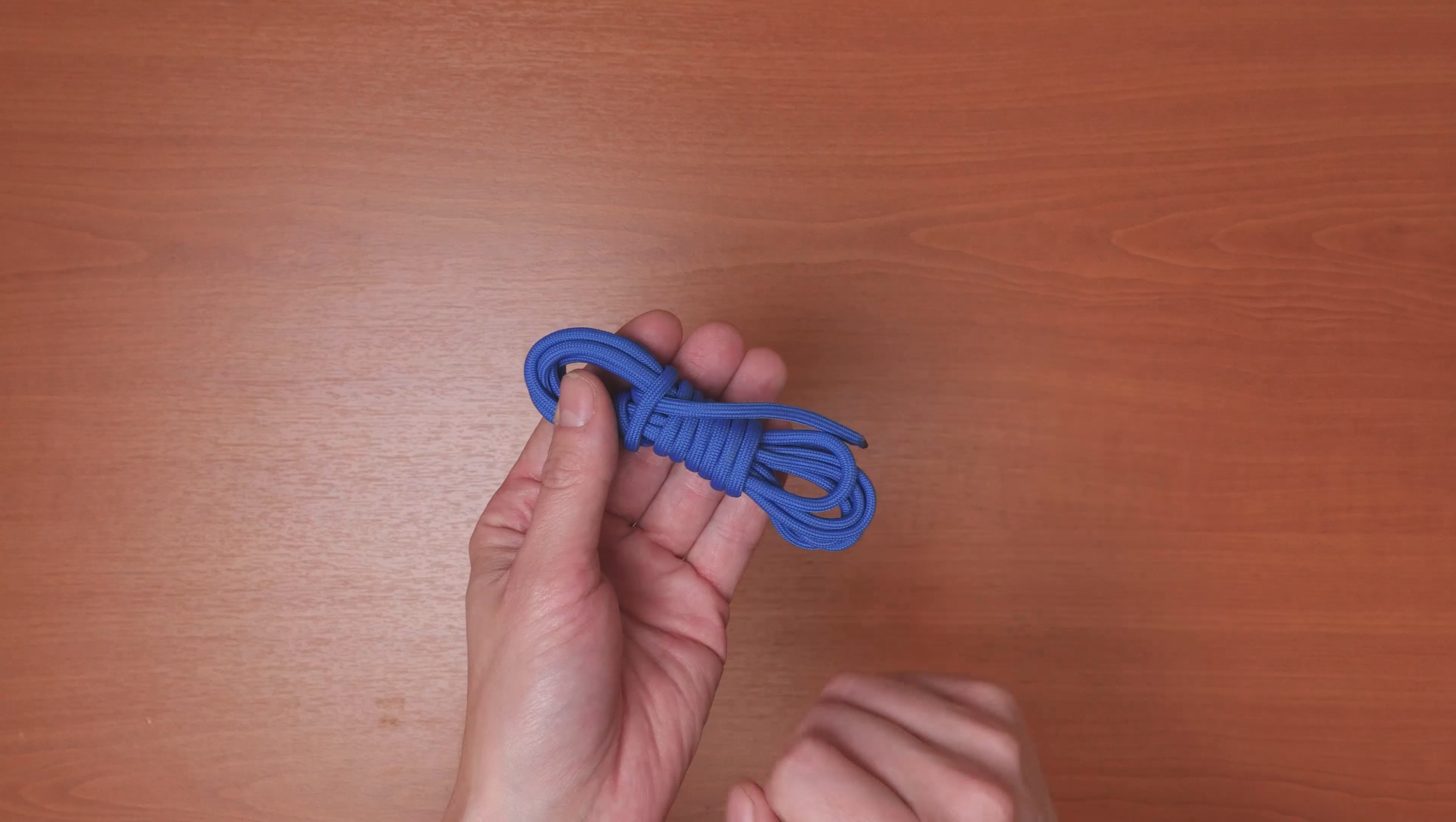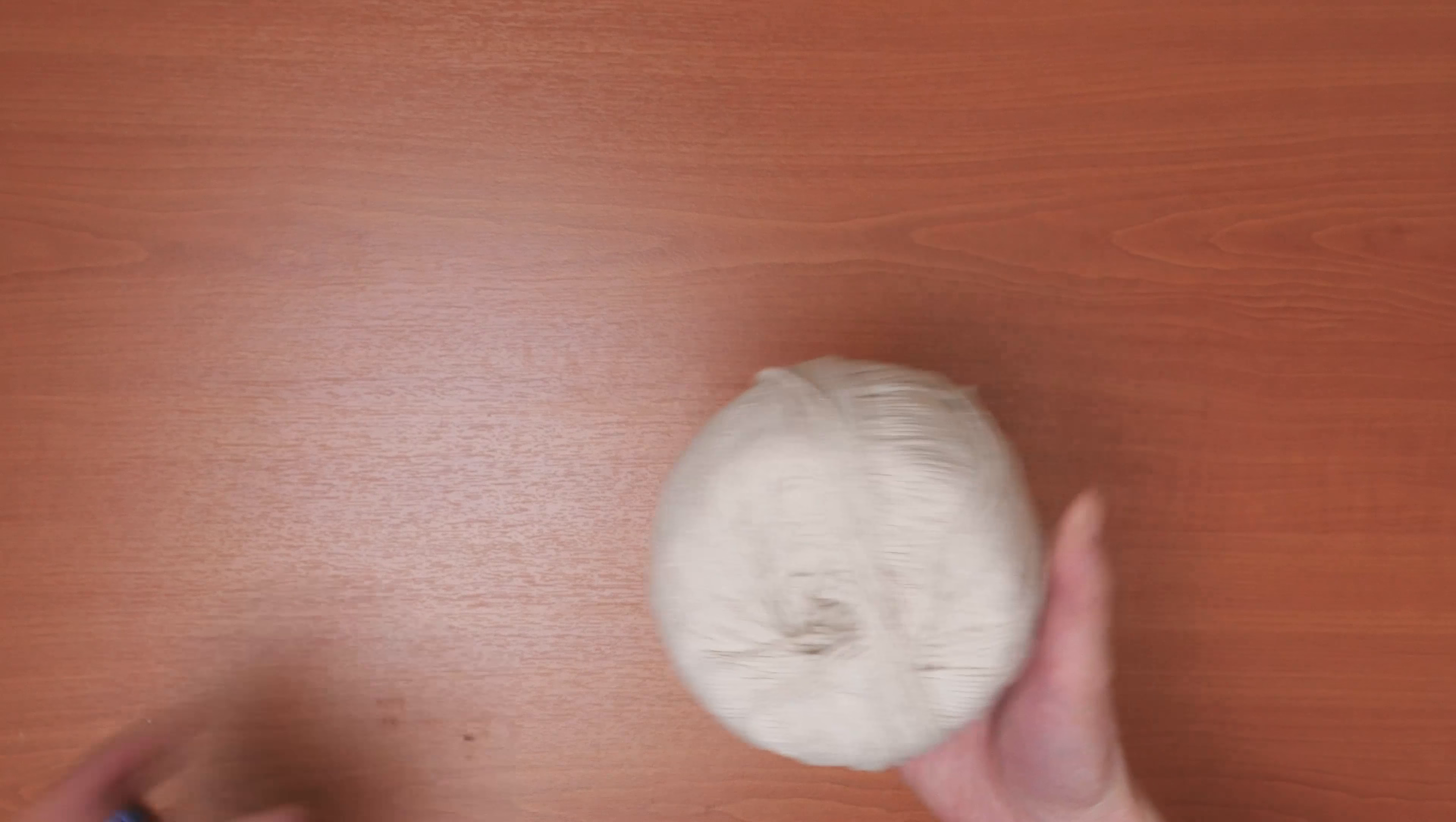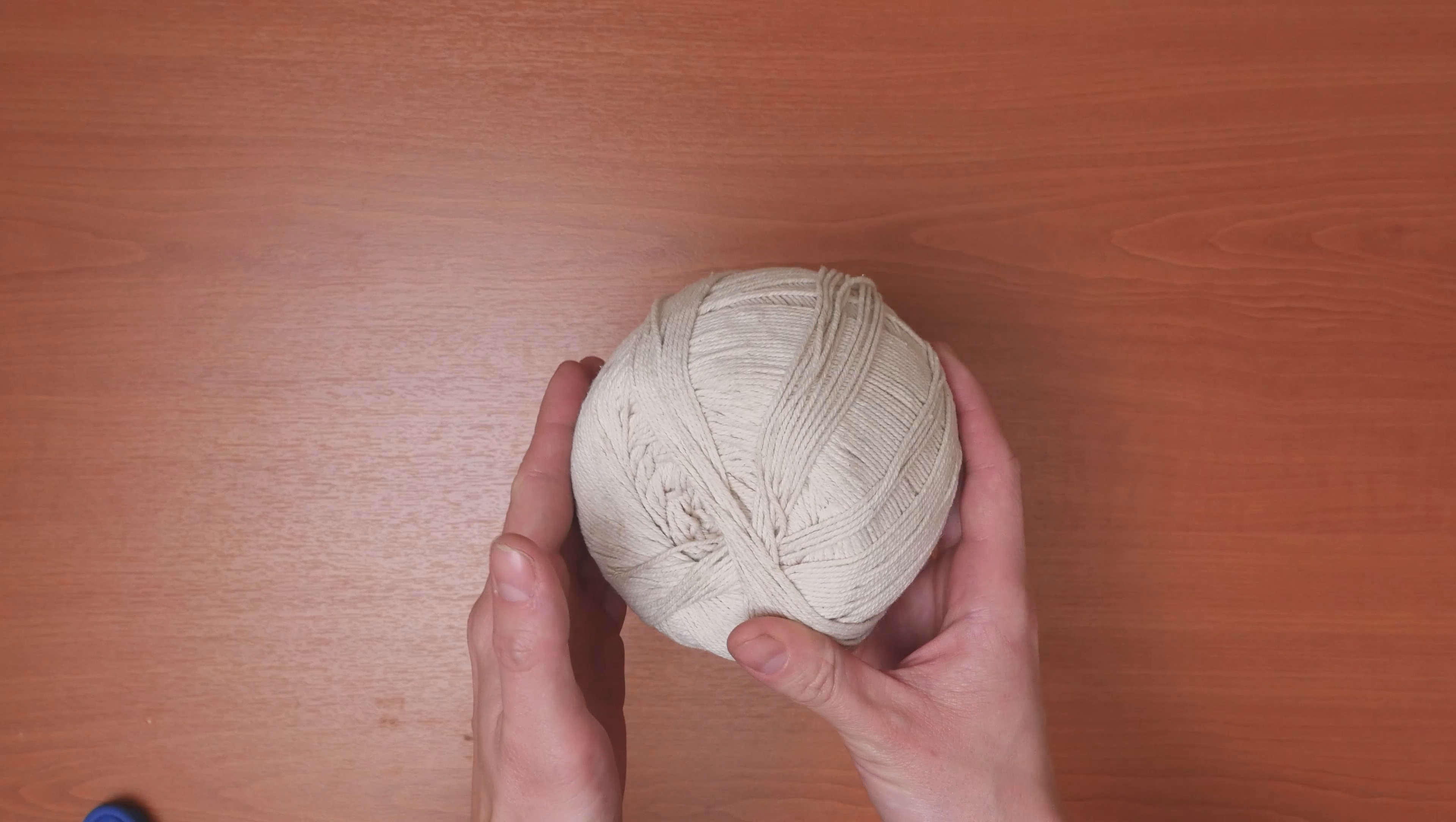As far as supplies for this project go, the only thing you're going to need is some cordage. For this demonstration, I'm going to be using some paracord. This is because it is a lot easier to see what I'm doing. But generally, you will want to use natural cordage, such as cotton or hemp twine. Hemp twine is my personal preference.